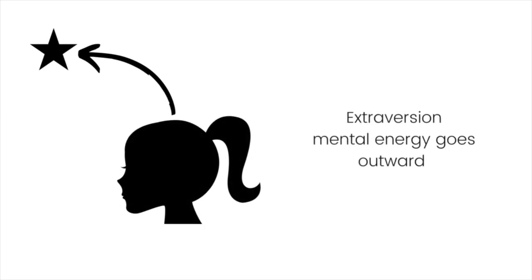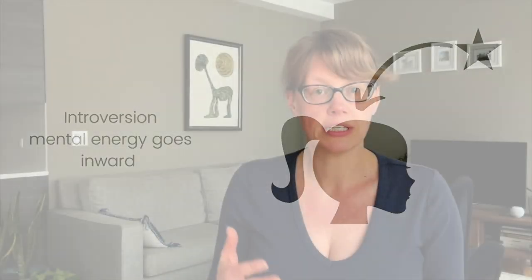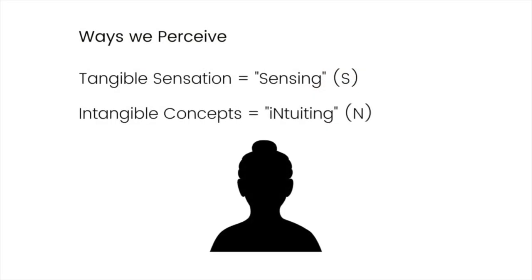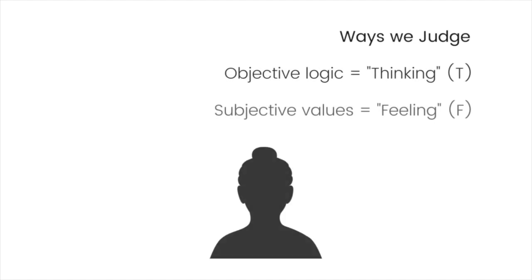A little context in case you're brand new to type: Carl Jung was a Swiss psychiatrist who, about a hundred years ago, formulated a theory of psychological types. He noticed that people's mental energy seemed to flow either to the external or internal world — now called extraversion and introversion. He observed that minds seem to be doing one of two things at any time: either perceiving or processing information, or judging and making decisions. He differentiated perceiving into tangible sensations or intangible concepts, and judging into objective logic versus subjective values.